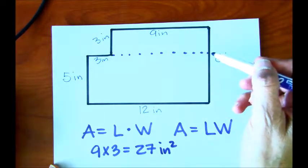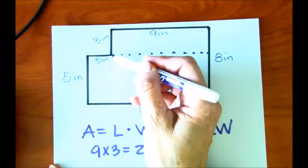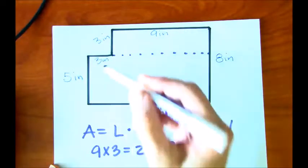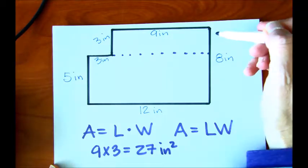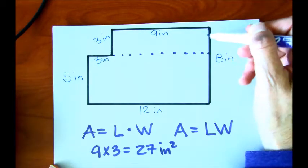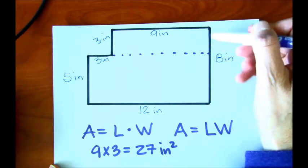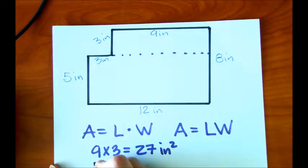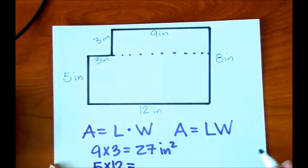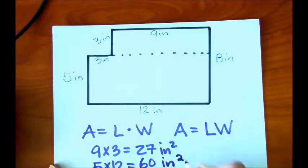The second rectangle is much bigger. Notice we've got a 5 and a 12. We're not going to use this 8 because that 8 includes some of this rectangle here. So 5 times 12. 5 times 12 is 60, 60 inches squared.